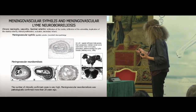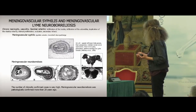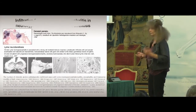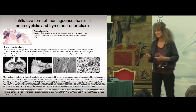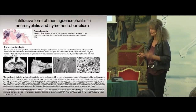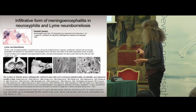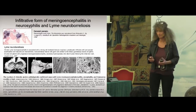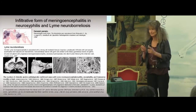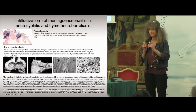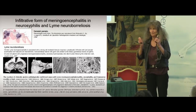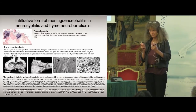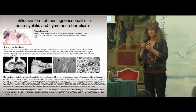The other major form — and we published the first pathological confirmation of such cases in 1990 — with respect to the other form, the other major form of neurosyphilis is meningoencephalitis. And the meningoencephalitis — and this is a point that we know less — there are two major forms of this meningoencephalitis.